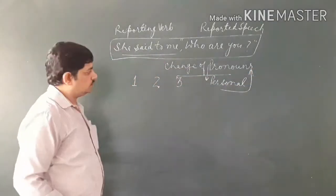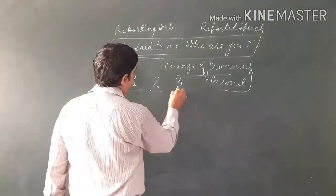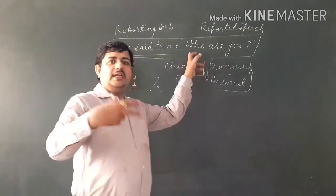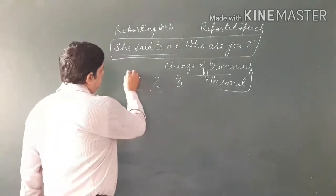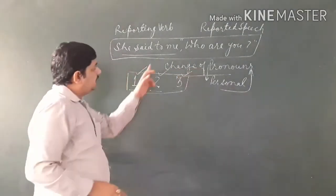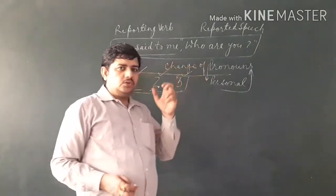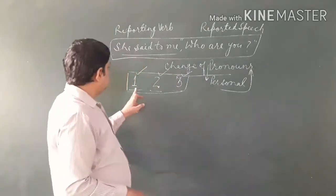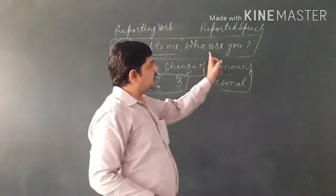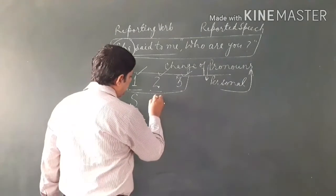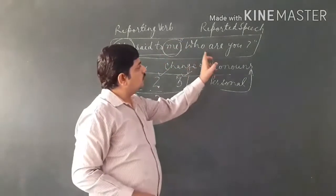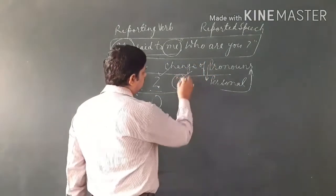So how do we change these pronouns from direct to indirect speech? We have to look at the first person, second person, and third person in the sentence and follow a specific order. The pronouns of first person change according to the subject — the subject means the speaker of the reporting clause. Second person pronouns change according to the object — the object means the listener of the subject.